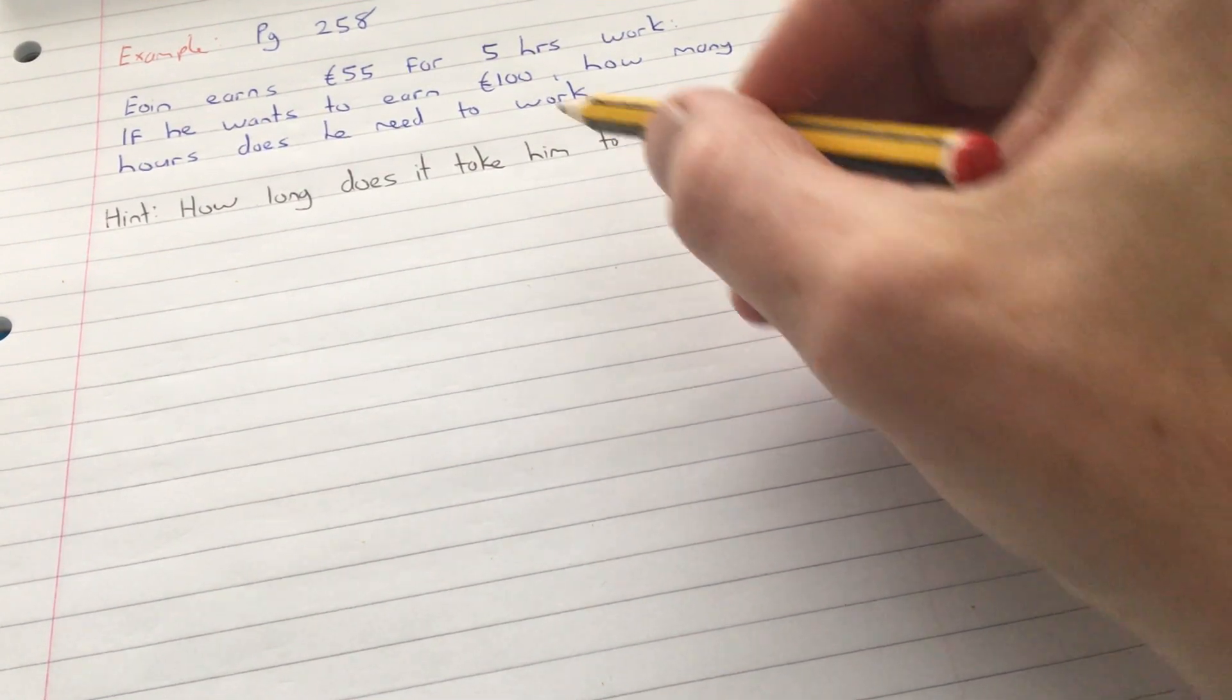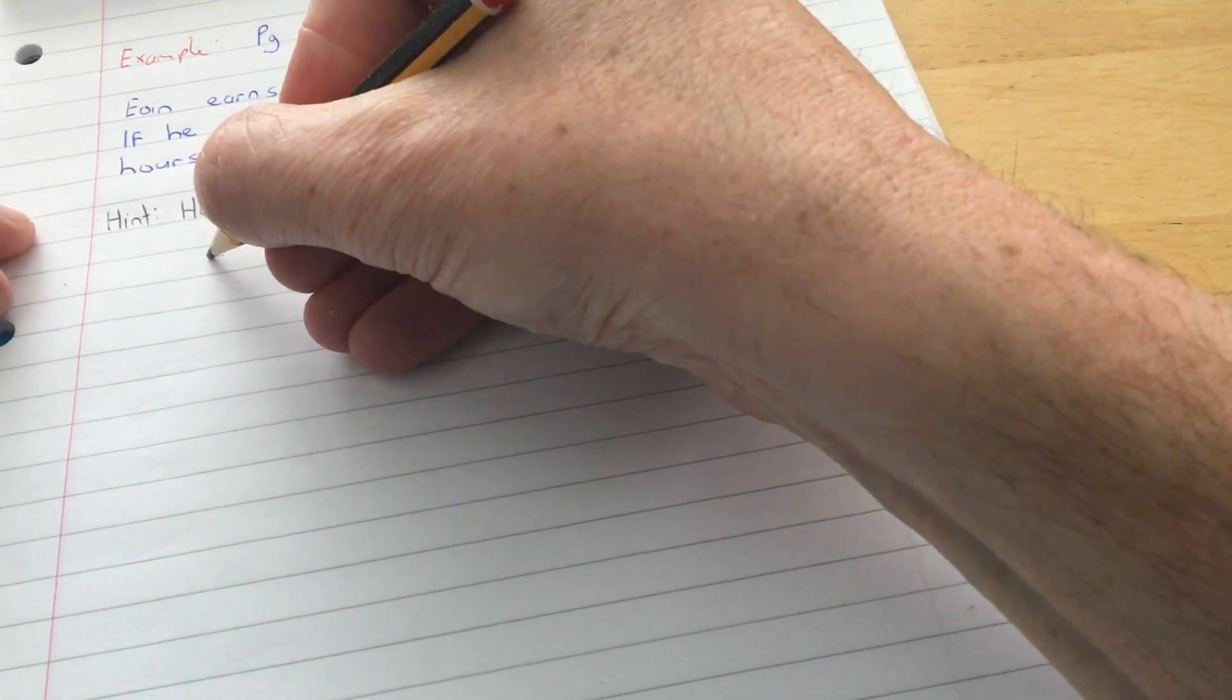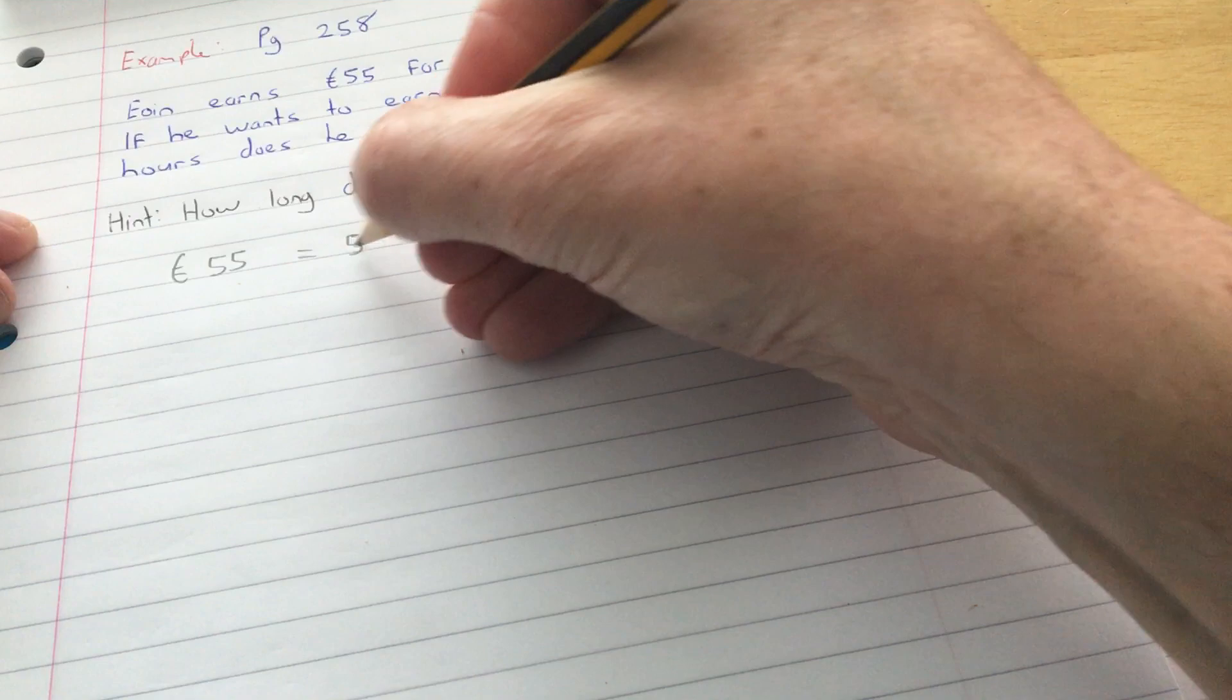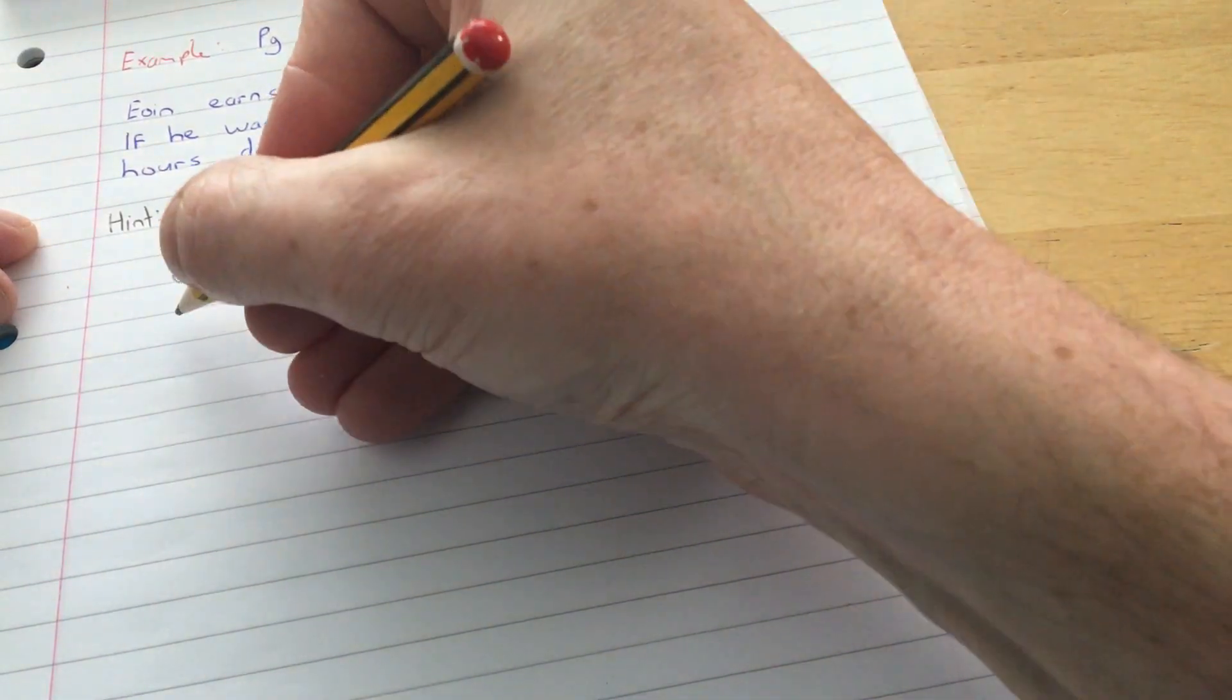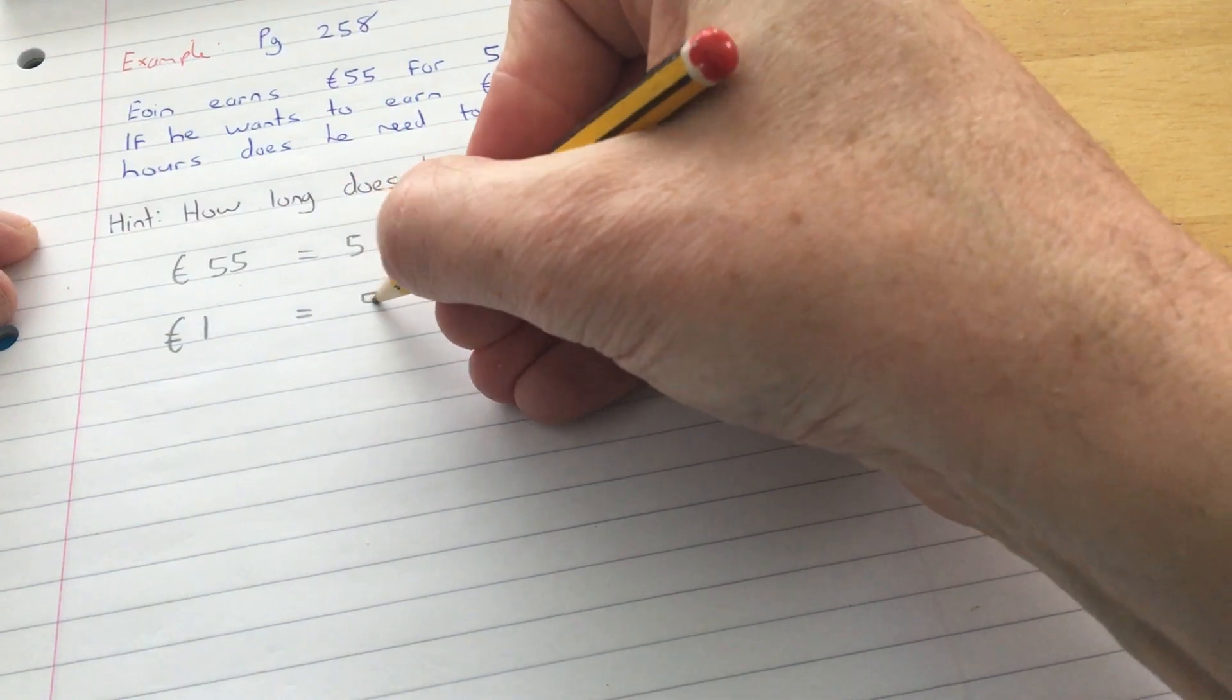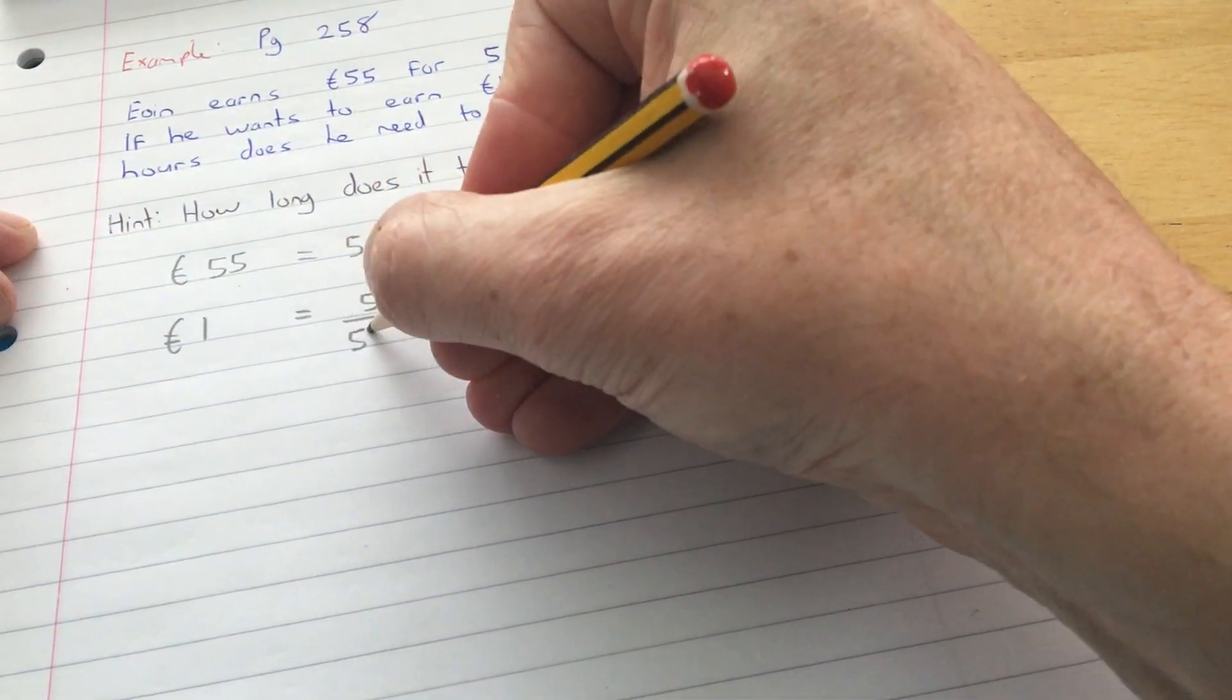For 55 euro, it equals 5 hours work. So for 1 euro, it would be equal to 5 over 55 hours.